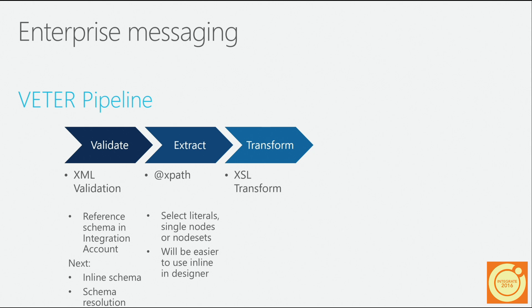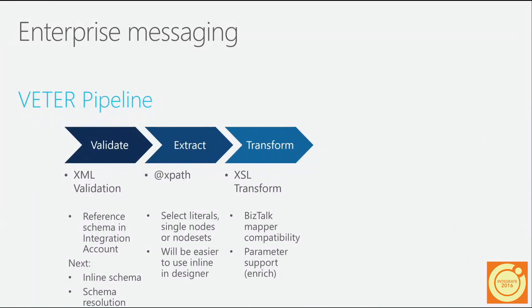Transform is the big one. You can use the same BizTalk Server mapper XSLT to transform your XML — it has compatibility with what we had on-prem. We've also added parameter support, so you can pass in parameters to the mapper to do enrichment within the transform. Now you can pass parameters from anything running in your logic app into your transform, instead of having to use promoted properties to reference context.